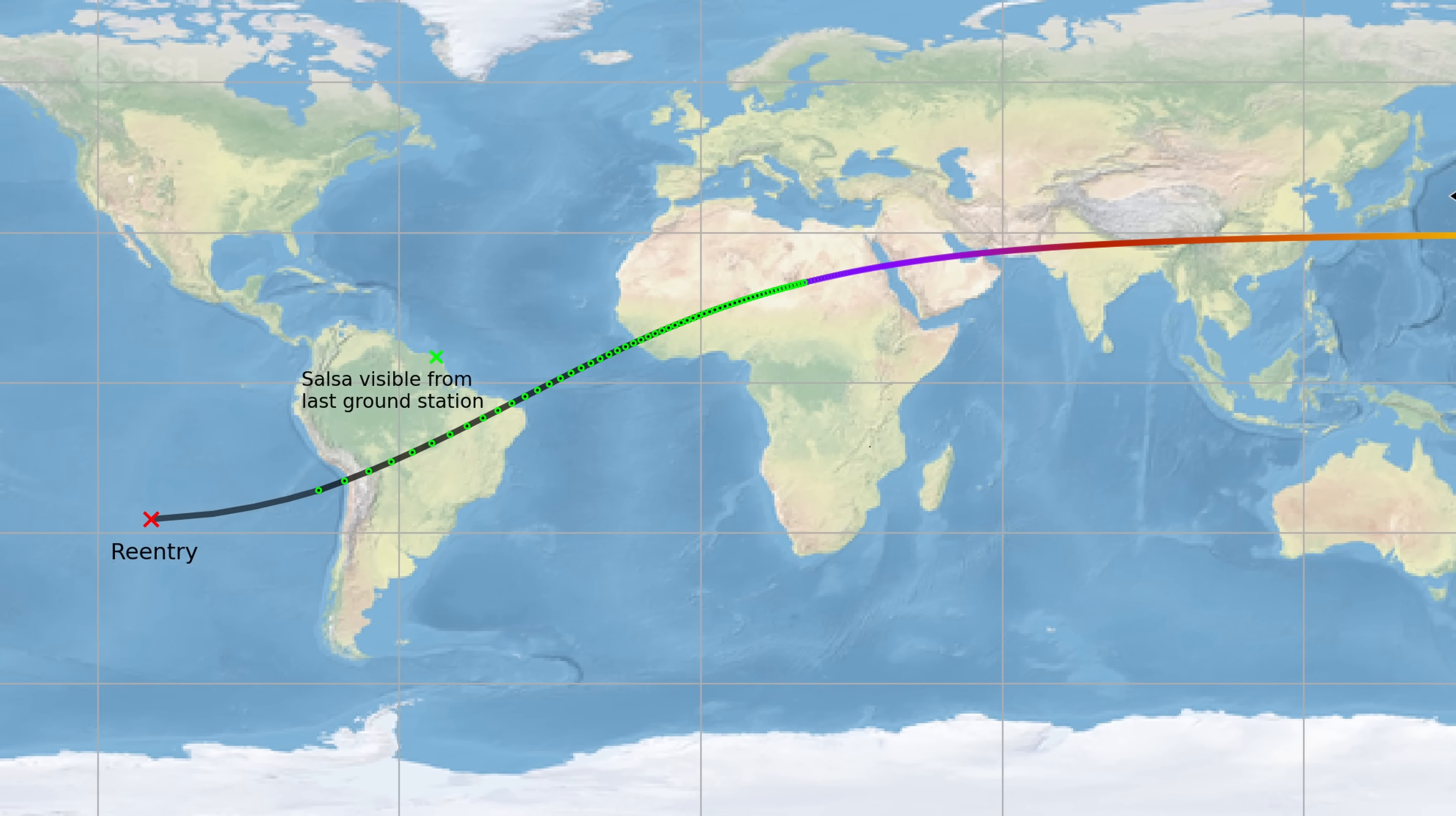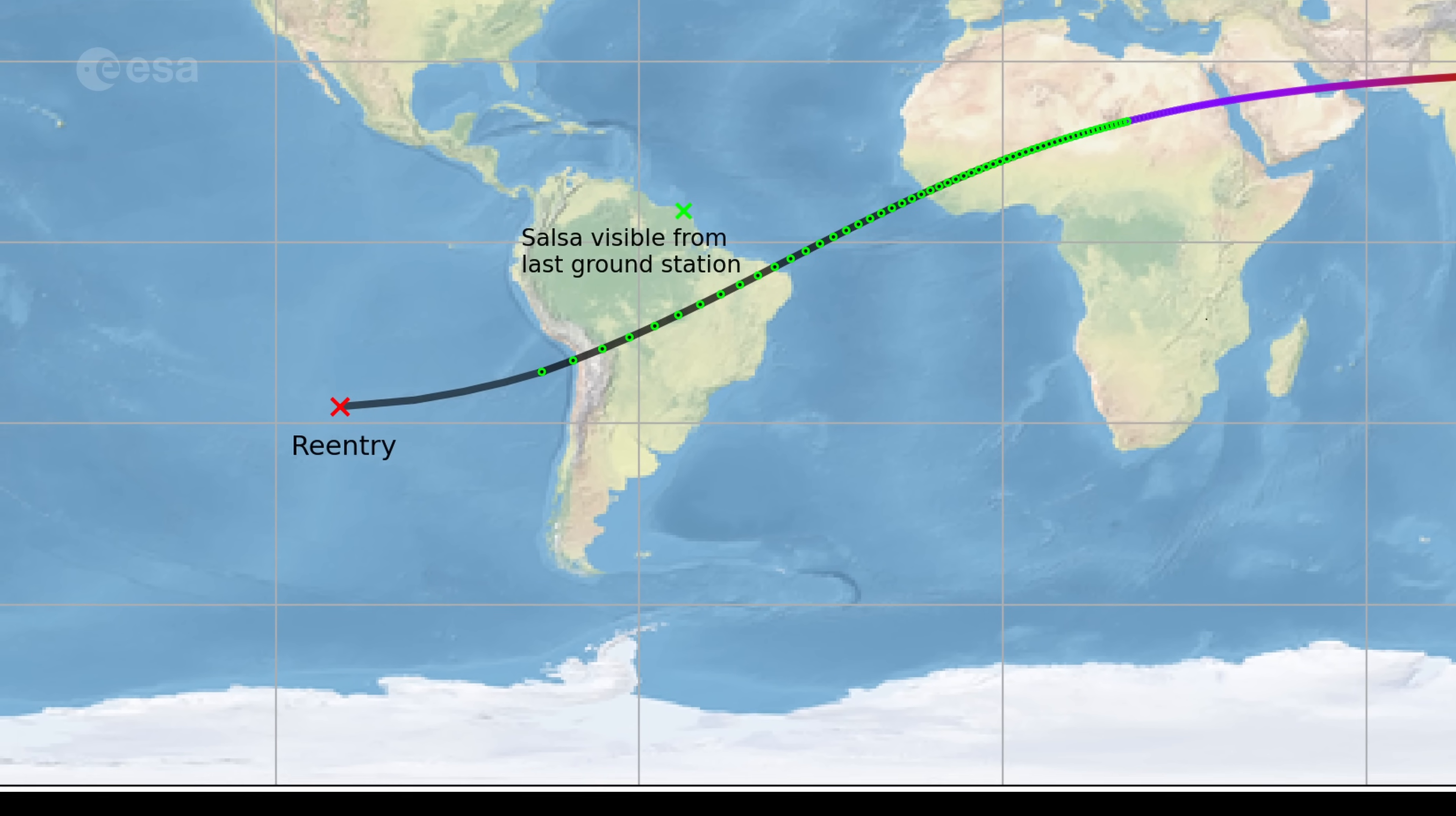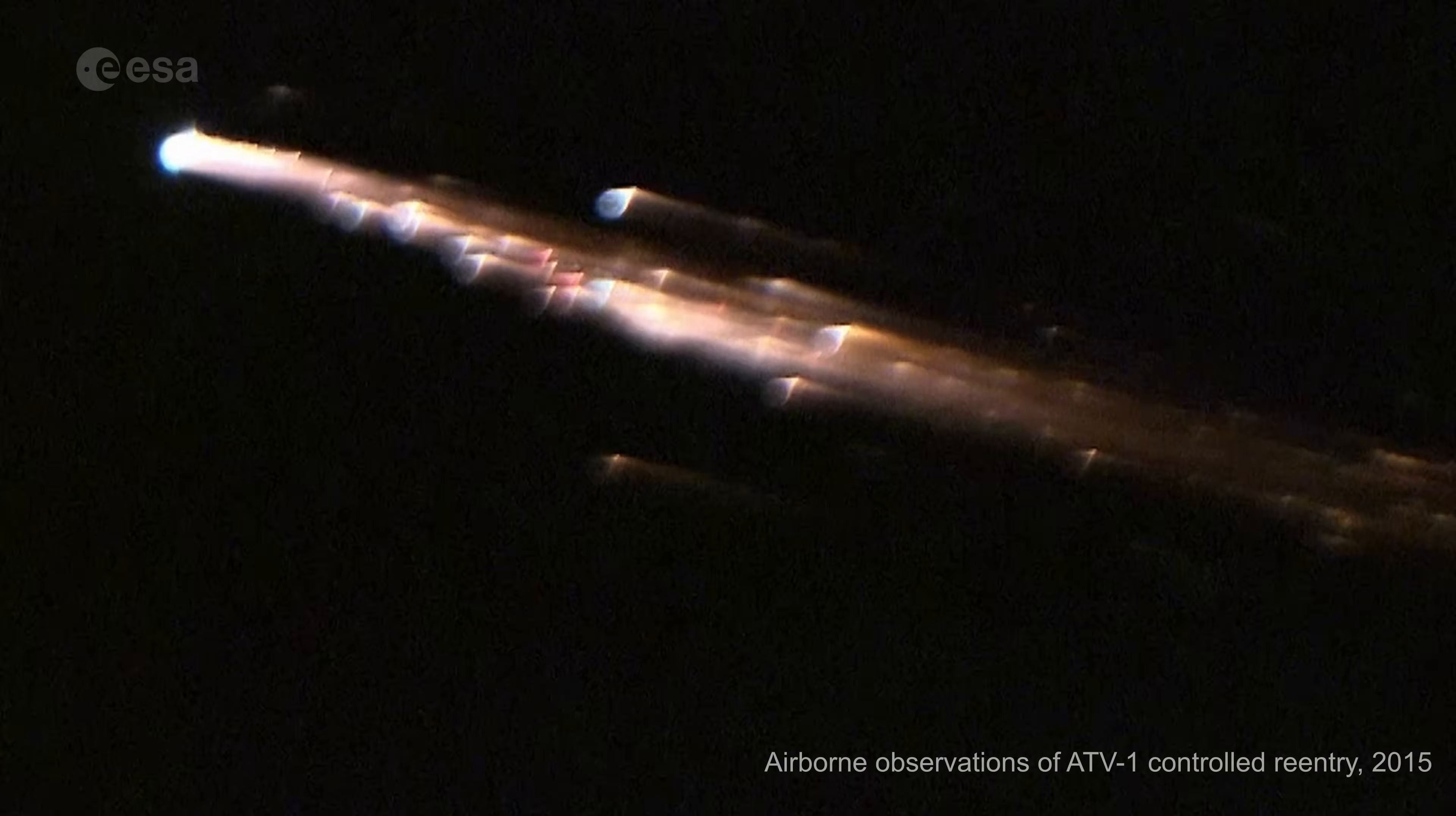Since this is a targeted re-entry, we know its location precisely enough that we can send a plane out to observe it from below. This is a rare opportunity that will provide real-time data that can't be gathered from the ground, helping to validate computer models and improve re-entry techniques for future missions.